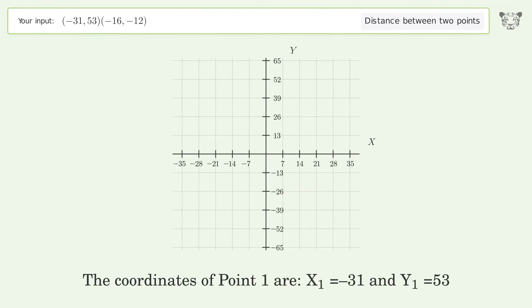The coordinates of point 1 are x1 equals negative 31 and y1 equals 53. The coordinates of point 2 are x2 equals negative 16 and y2 equals negative 12.